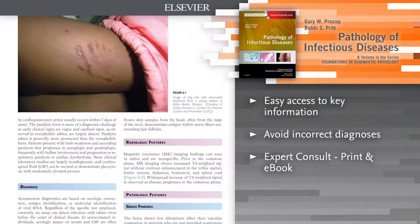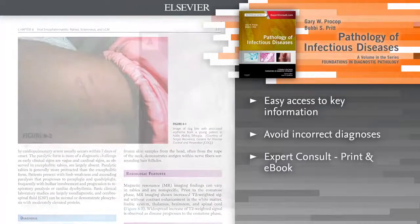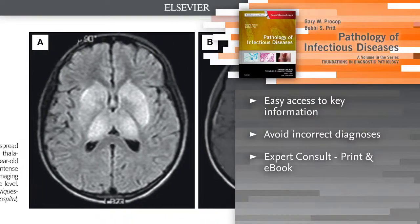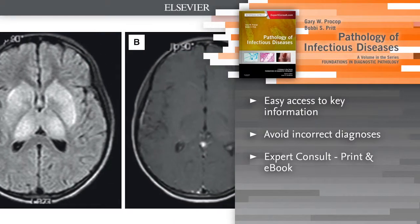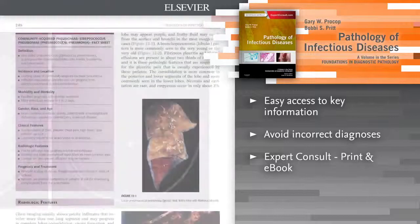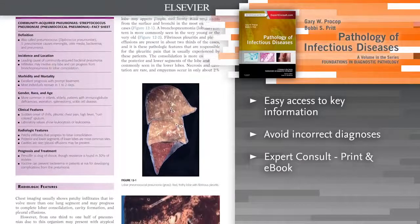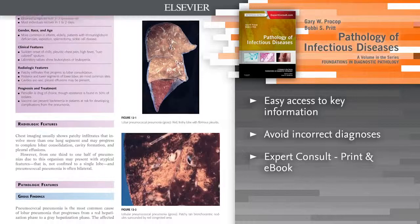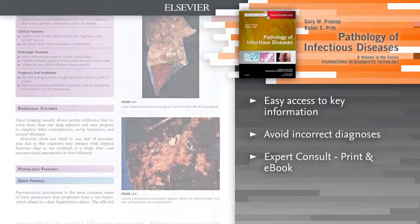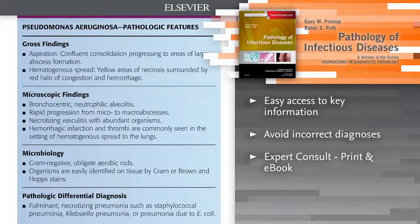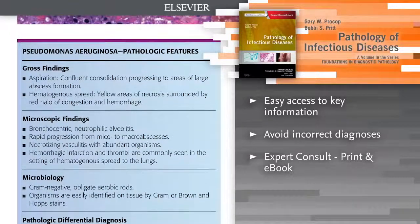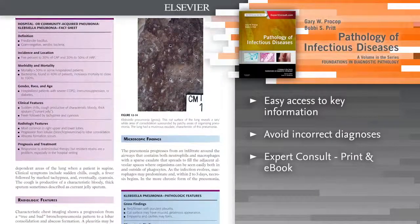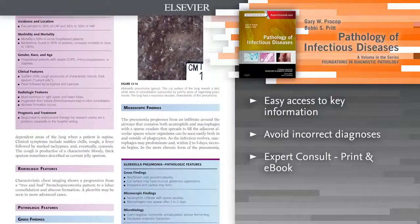Quickly find the information you need thanks to a well-organized, user-friendly format with templated headings, detailed illustrations, at-a-glance tables and segmentation by type of infectious organism — viral, bacterial, fungal and parasitic. Avoid common problems that can lead to an incorrect diagnosis. A special section on artifacts and pitfalls shows you what to look for.